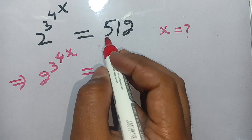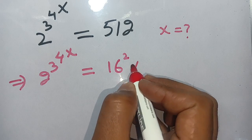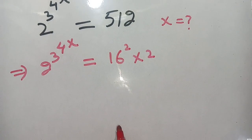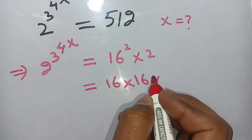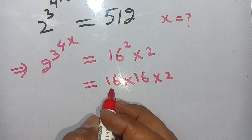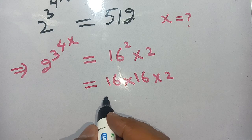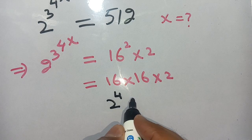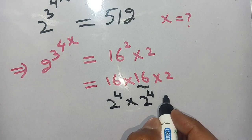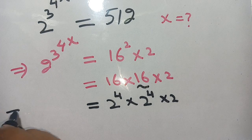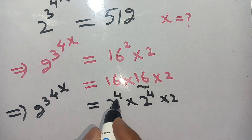512 can be expressed as 16 squared times 2. We can break down 16 in terms of 2: we write 16 as 2 raise to power 4. Same case with the other 16, we write it as 2 raise to power 4, and times 2. Thus we get 2 raise to power 3 raise to power 4 raise to power x is equal to 2 raise to power 4 times 2 raise to power 4 times 2.